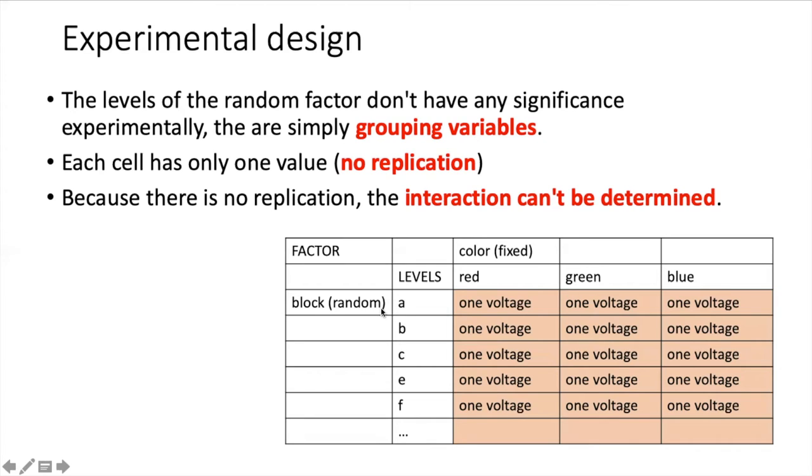There's some issues with that. We really only have one measurement for each of the combinations in contrast to the other two-factor ANOVA, where we had five replicates for each one of the cells in the table.